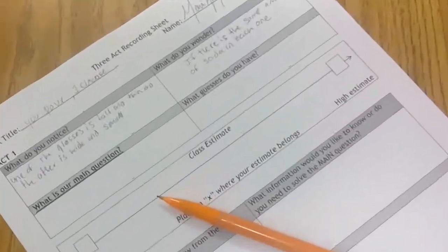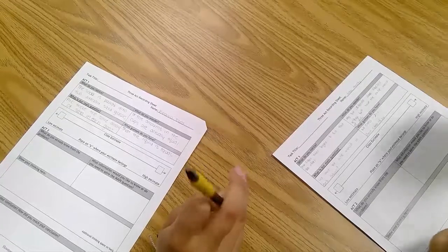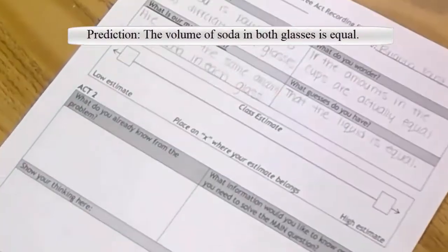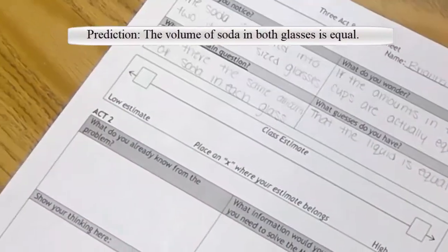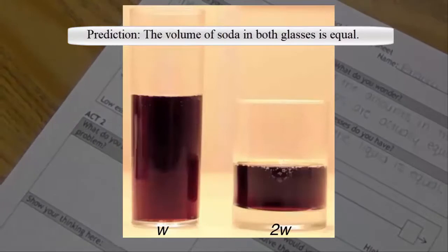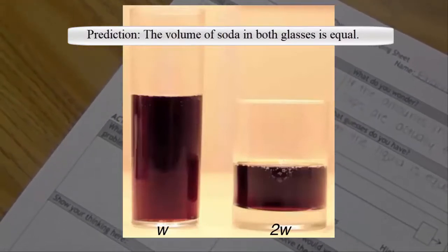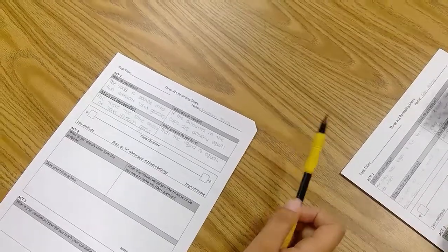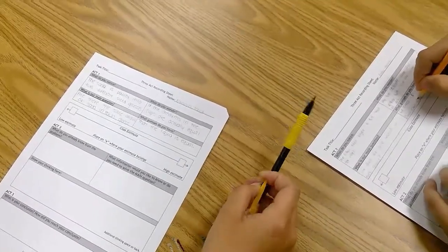If they have the same amount of liquid in each one. They look like equal to me because in the shorter glass it looks like it's about halfway, but the width of the shorter glass looks like twice as big as the skinny glass.